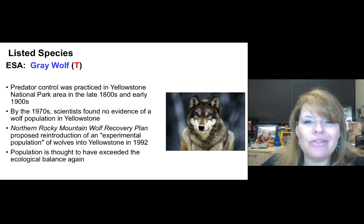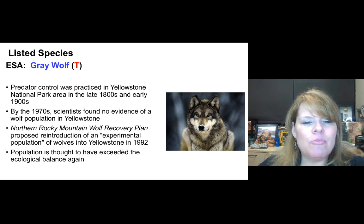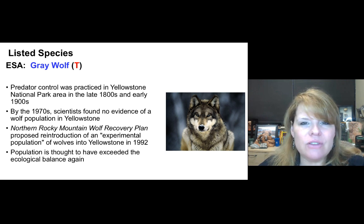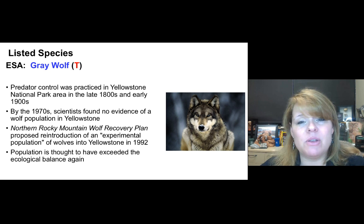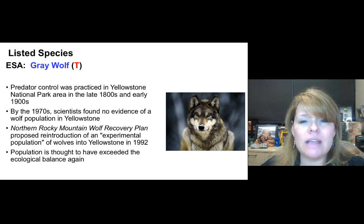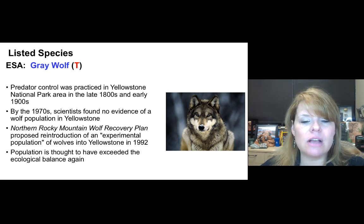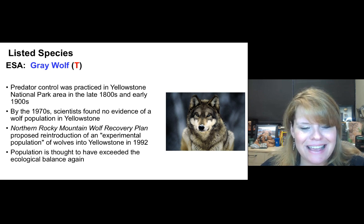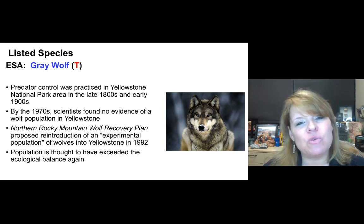The gray wolf is still listed as Threatened under the Endangered Species Act. Predator control was practiced in Yellowstone National Park in the late 1800s and early 1900s, and by 1970, scientists found no evidence of a wolf population there at all. The Northern Rocky Mountain Wolf Recovery Plan proposed reintroduction of an experimental population — an exemption under section ten — and in 1992, wolves were reintroduced into Yellowstone. The population is now thought to have exceeded ecological balance, so the fate of the gray wolf bears watching.